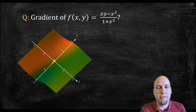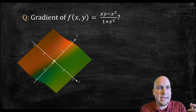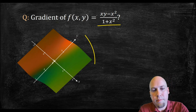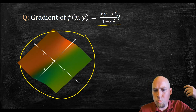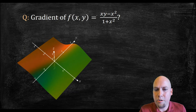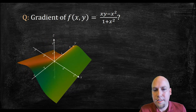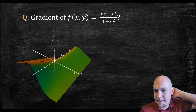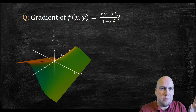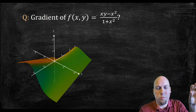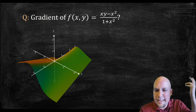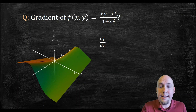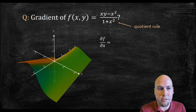Let's compute the gradient of a two-variable function to keep it simple. What is the gradient of f(x, y) = (xy − x²) / (1 + x²)? On the left we have a plot of this function, which has some mountains and valleys. To compute the gradient, you just compute the two partial derivatives — with respect to x and with respect to y — and throw them in a vector. If you already know how to compute partial derivatives, computing the gradient is trivial.